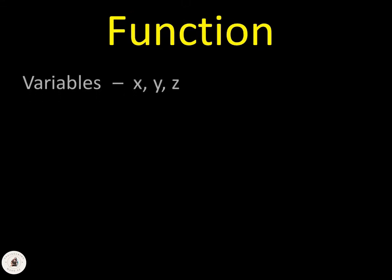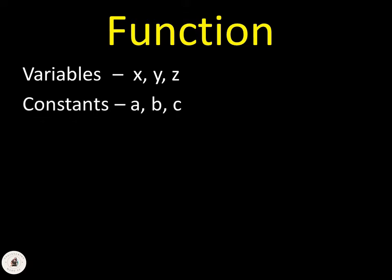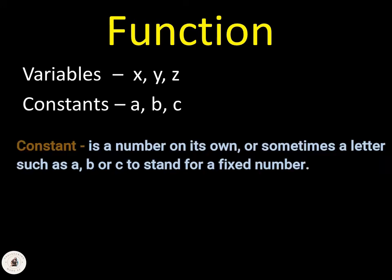Usually, we use the variables x, y, and z, and we use the letters a, b, and c for constants. A constant is a number on its own, or sometimes a letter such as a, b, or c, to stand for a fixed number.